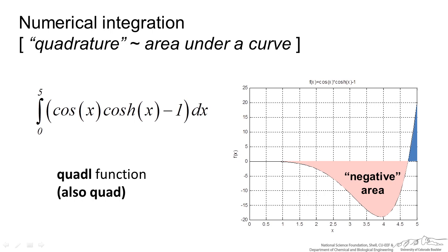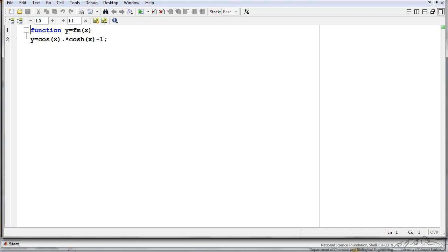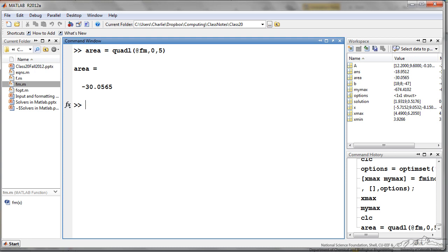The last solving technique I am going to talk about is numerical integration — estimating the area underneath a curve. For example, we have cosine(x) times the hyperbolic cosine of x minus 1, and we want to find the area between 0 and 5. Keep in mind there will be negative area since the function is negative for most of this domain. I use the quadl function in MATLAB — you can also use quad; they are similar but use different algorithms. Using my function handle for fm between 0 and 5, it tells me the area is about negative 30.